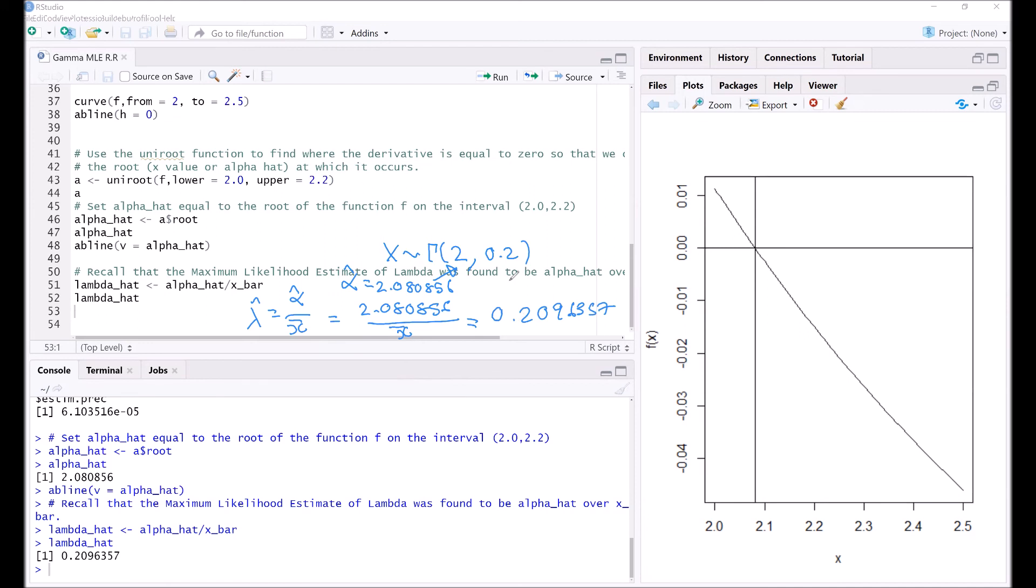We can see that this is roughly equal to 0.2, so it's quite close. It's roughly 0.21 and alpha hat is roughly 2.1. So we were able to carry out estimates of the parameters of the population values of 2 and 0.2 by using the maximum likelihood estimates.